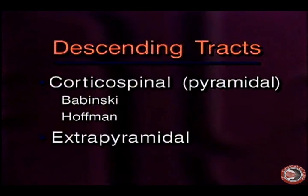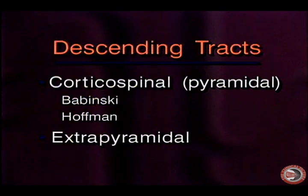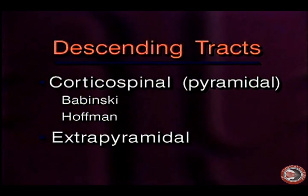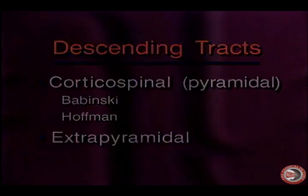There are essentially two descending tracts which a clinician should be familiar with. The first is the corticospinal or pyramidal tract and the second is the extrapyramidal. Lesions of either of these two tracts produce an upper motor neuron lesion and present with the signs discussed previously in this tape.